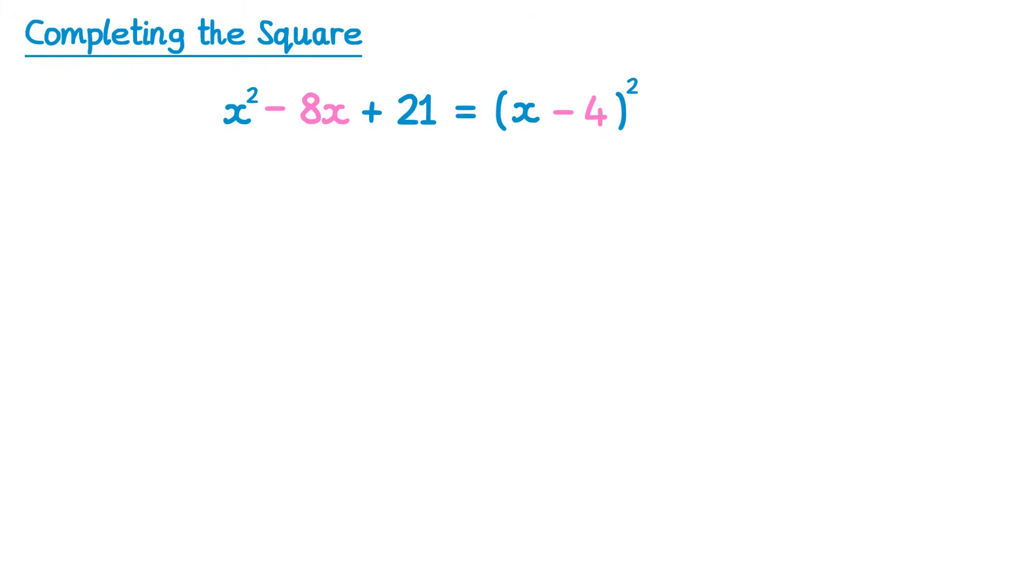What we then do is take away from this whatever number we just wrote, but squared. When you square a negative number, you should always put it in brackets like this. Negative 4 squared is negative 4 times another negative 4, which actually just gives us a regular 16. So we're taking away 16.